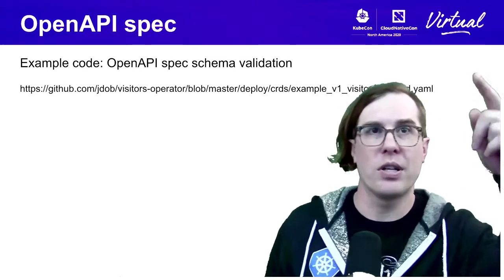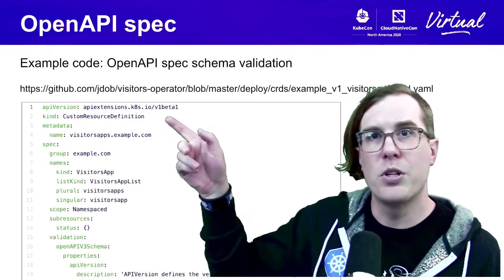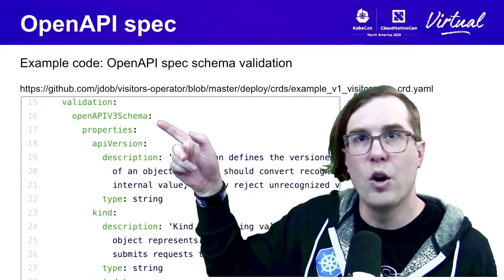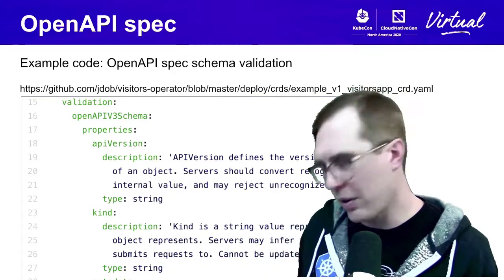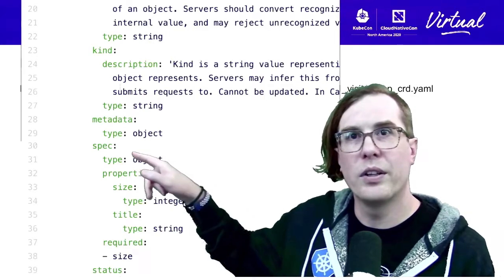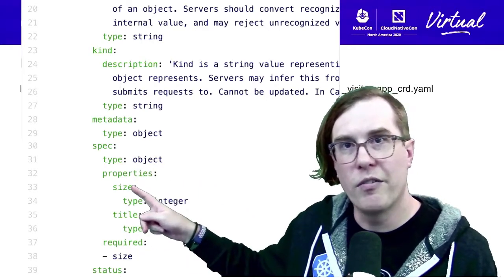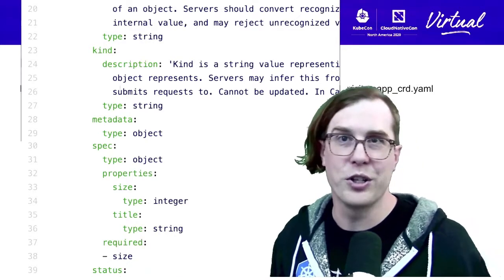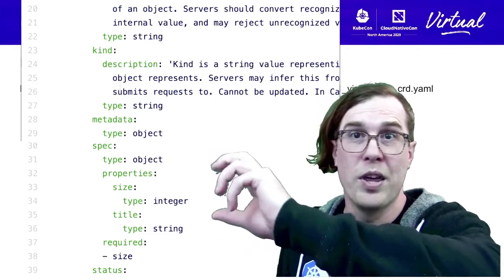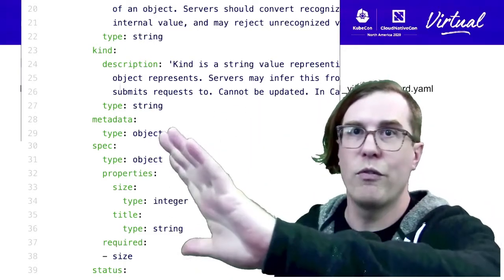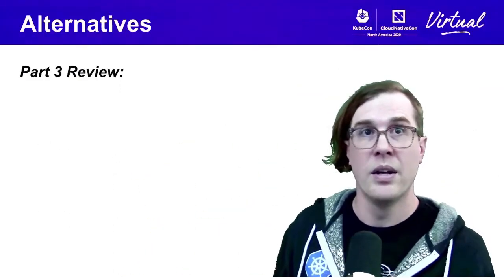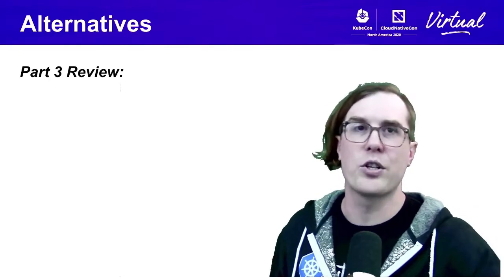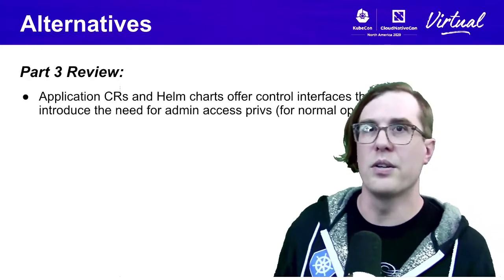Here's an OpenAPI spec schema validation example from one of my team members — a custom resource definition with a validation section using OpenAPI v3 schema. In the spec area, there's a value called 'size' that's an integer and is required. It's not a super complex validation — it's validating the schema more than the values themselves. But this can be easily done using OpenAPI and can be used regardless of whether you're using admission controllers or not. Any kind of interaction with the Kubernetes API — that's generally considered a best practice.